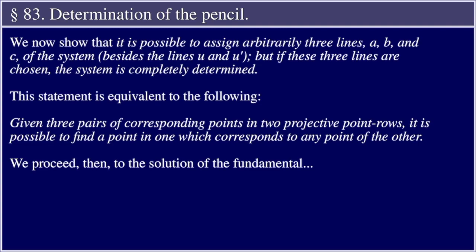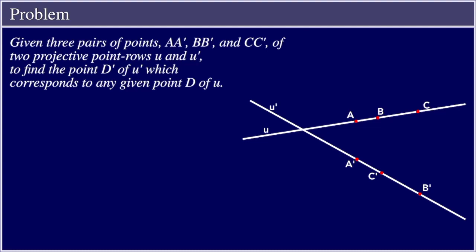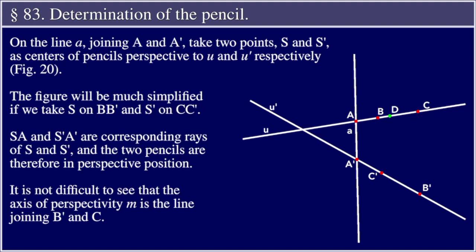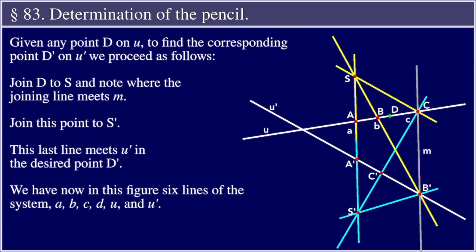We proceed then to the solution of the fundamental problem. Given three pairs of points AA', BB', and CC' of two projective point rows u and u', to find the point D' of u' which corresponds to any given point D of u. On the line A, joining A and A', take two points S and S' as centers of pencils perspective to u and u' respectively. Figure 20. The figure will be much simplified if we take S on BB' and S' on CC'. SA and S'A' are corresponding rays of S and S', and the two pencils are therefore in perspective position.